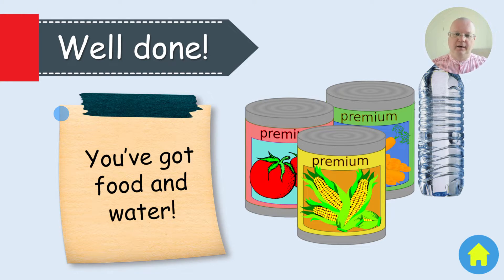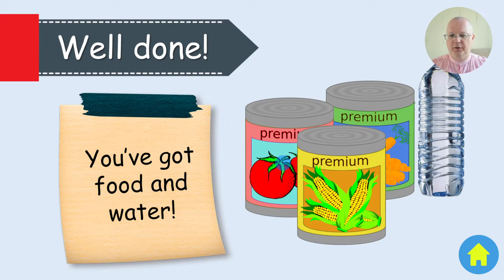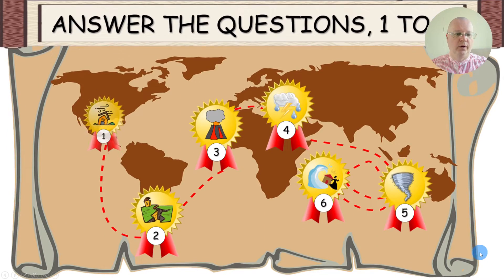It's like a survival map — they don't get points but they get items they may need if a natural disaster happens and they are out in the open. Let me show you one more.